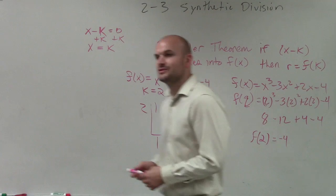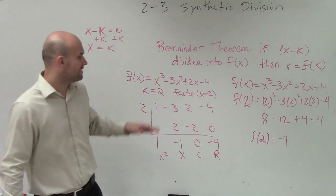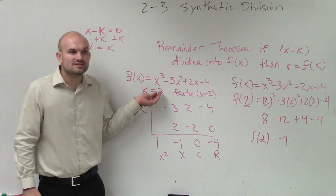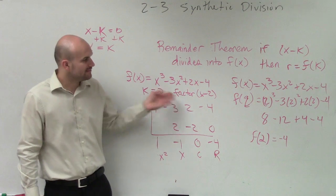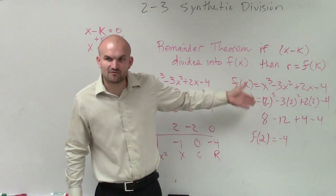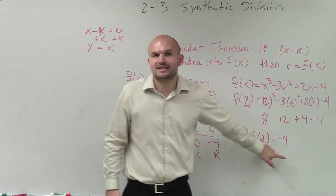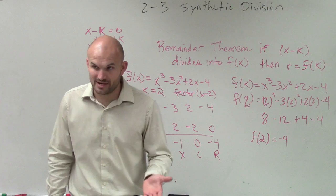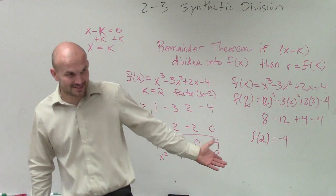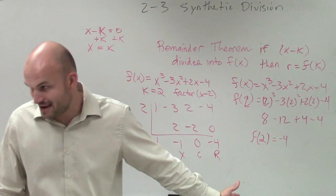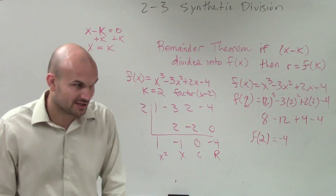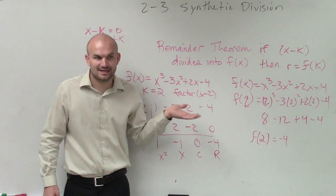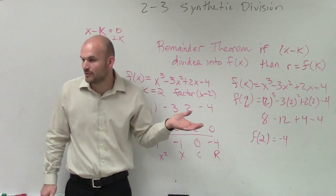So one thing I want you guys to understand is if you do synthetic division, whatever your zero is, if you evaluate the polynomial for that zero, you're going to get the remainder to be exactly the same. So this is helpful in one of two ways. One, you can always verify, like on your test, I'll ask you to verify the remainder by using the remainder theorem. Meaning, I'll expect you to show me that you can prove it two different ways.